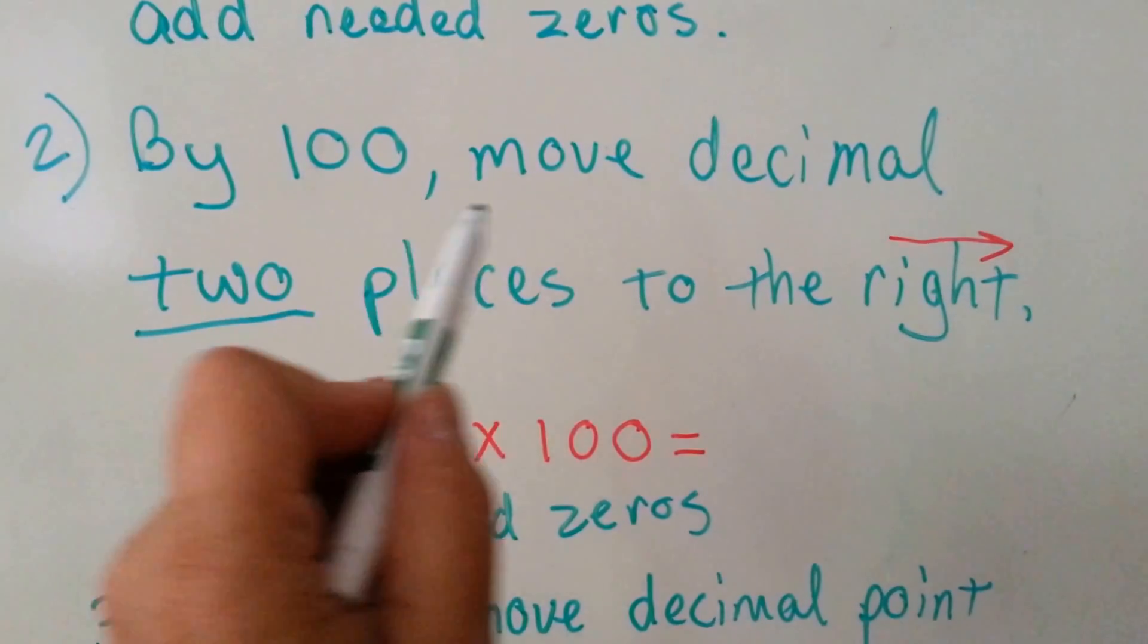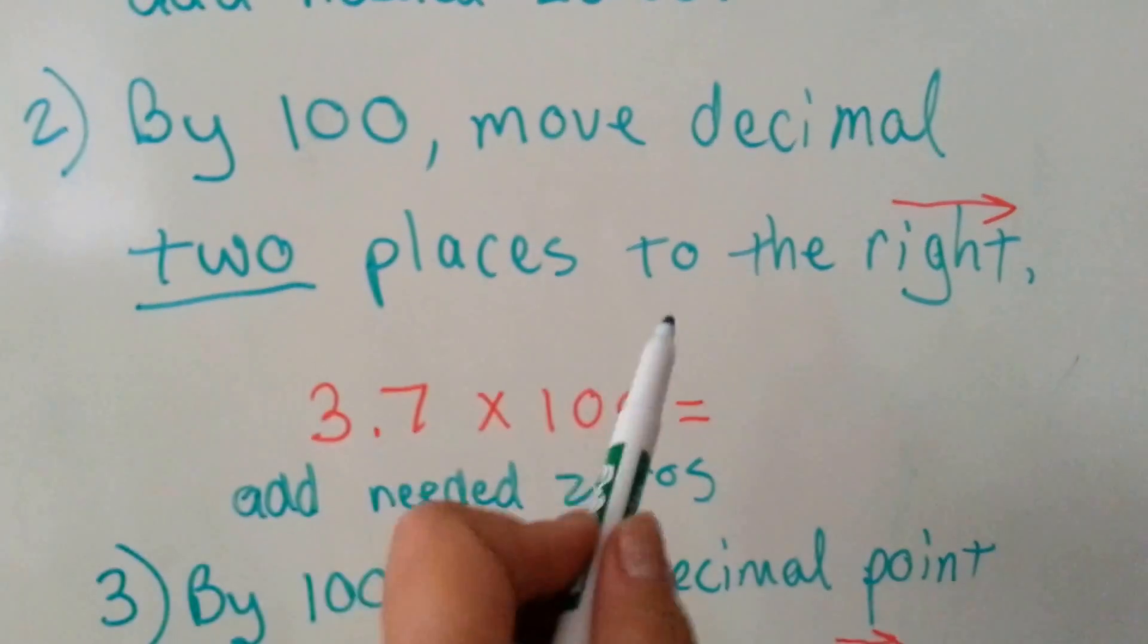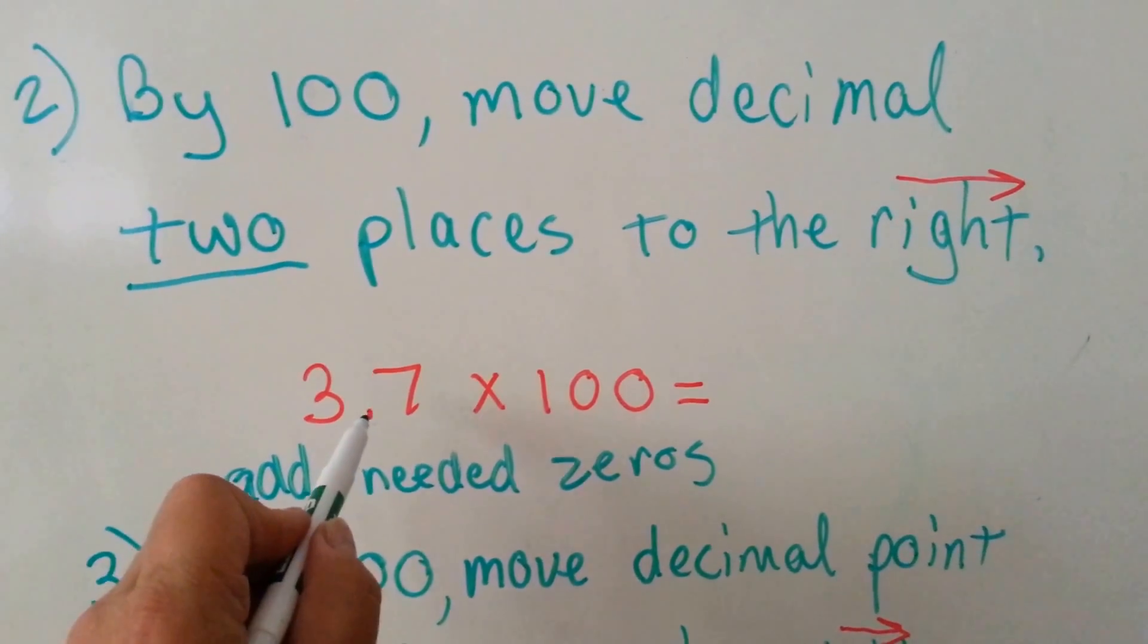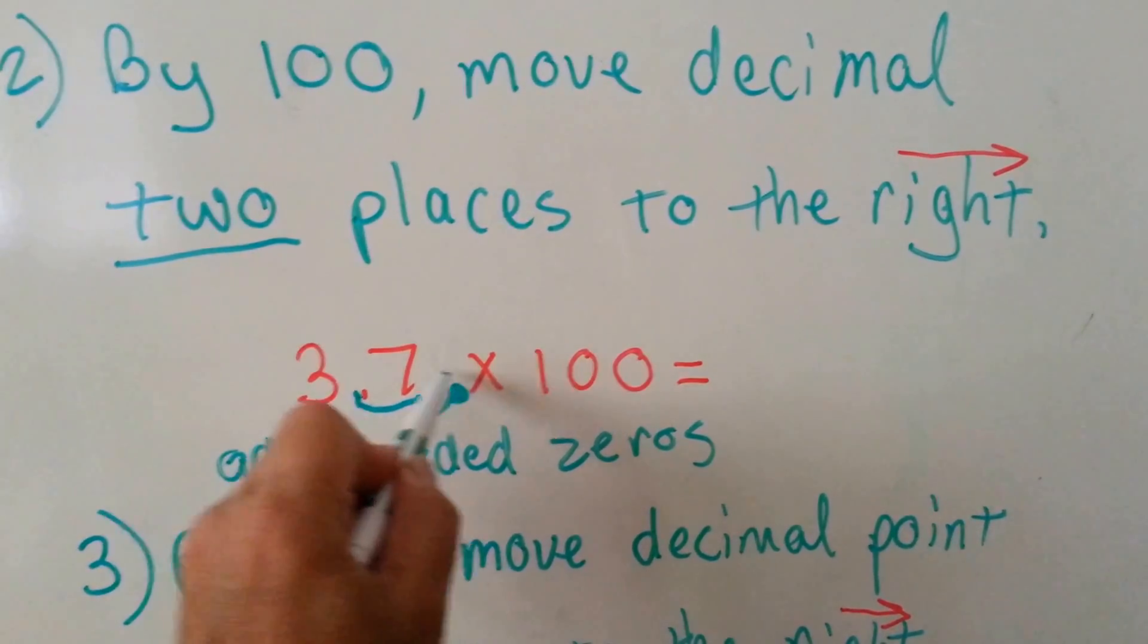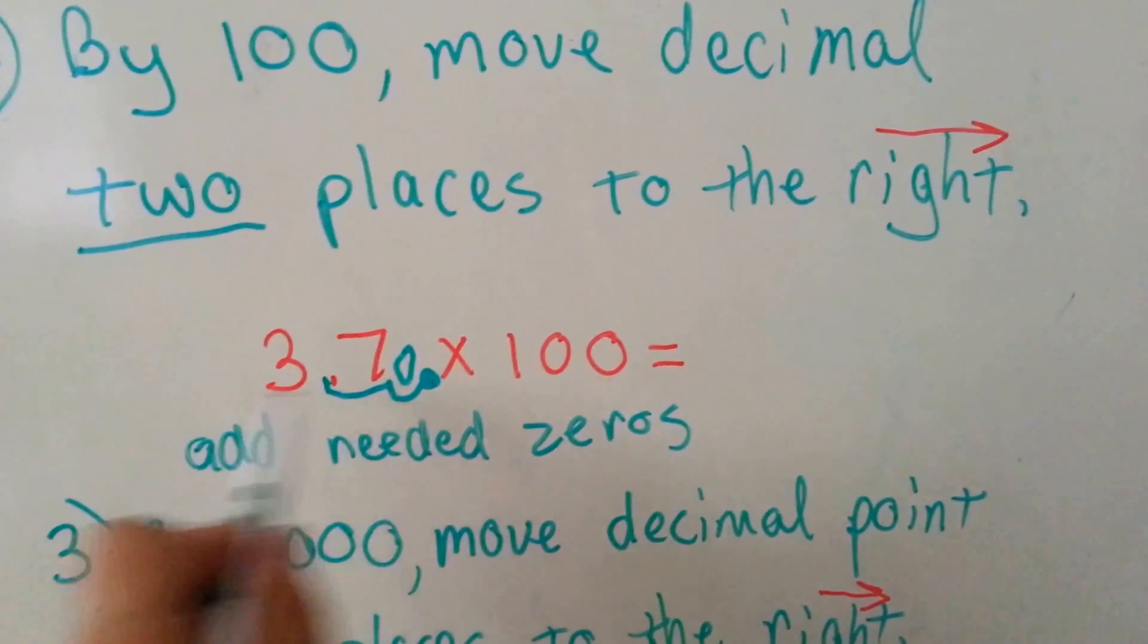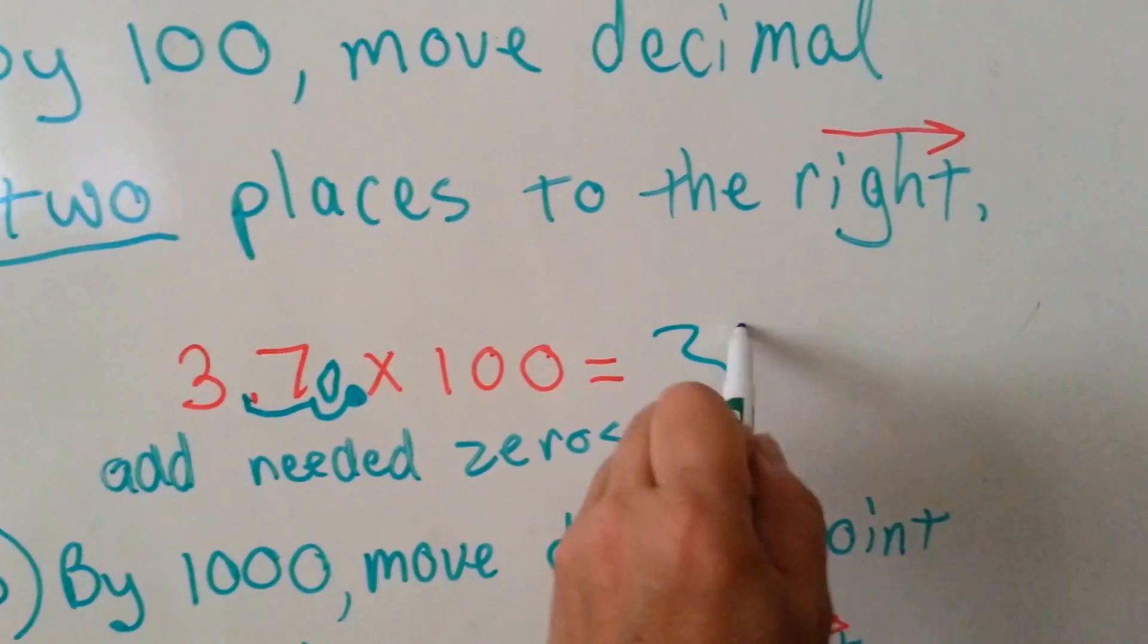If you're going to multiply by a hundred, you move the decimal two spaces to the right, so 3.7 becomes one, two, add a zero, it becomes three hundred and seventy.